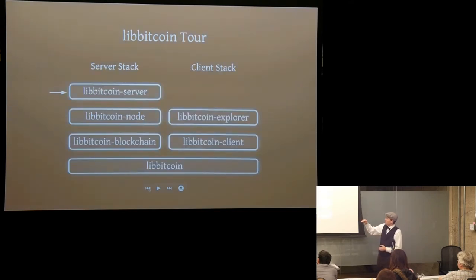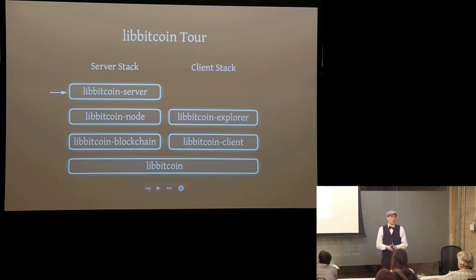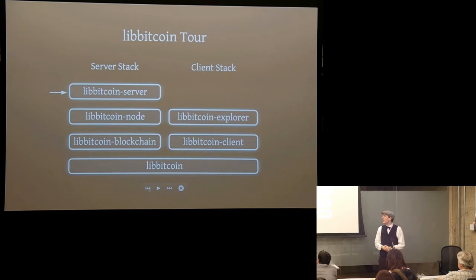LibBitcoin node is basically just a node — it sits on the network, connects to peers, transfers data back and forth, and does the things that a node would do. If you just need a node for your project for whatever reason, it's just sitting there ready for you to use.